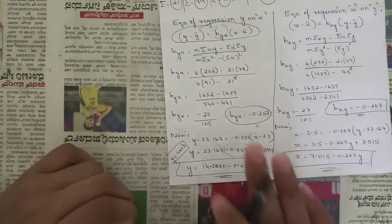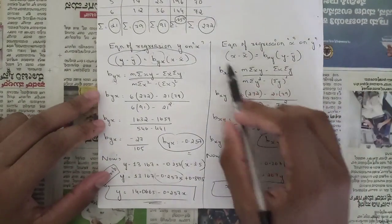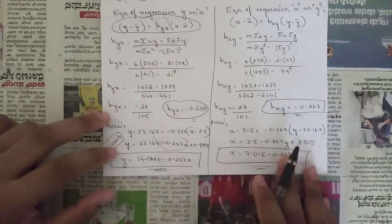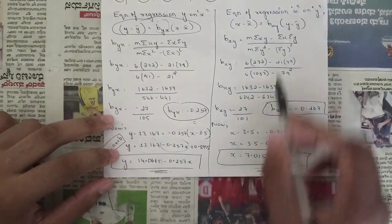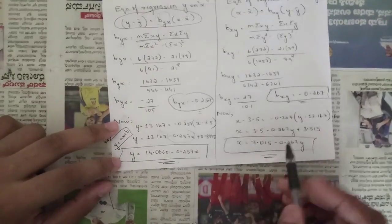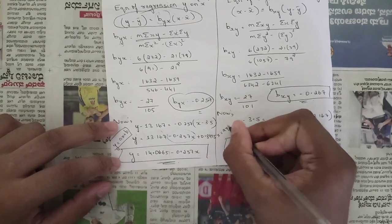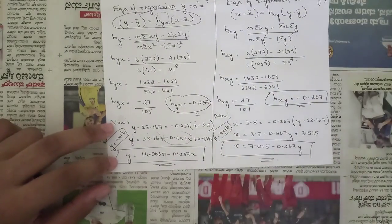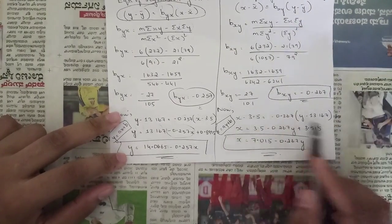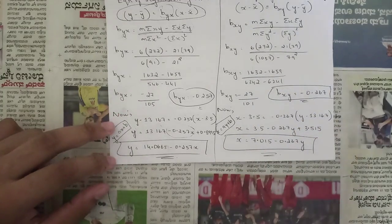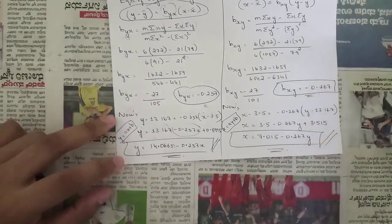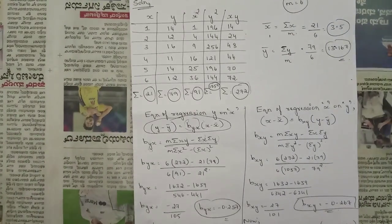For regression x on y, the formula is: x − x̄ = b_xy·(y − ȳ), where the denominator contains only y terms. We get b_xy = −0.267. Substituting: x − 3.5 = −0.267·(y − 13.167), and bringing x to one side gives the equation of regression x on y. So the two regression lines are: y = ax + b (regression y on x) and x = ay + b (regression x on y).